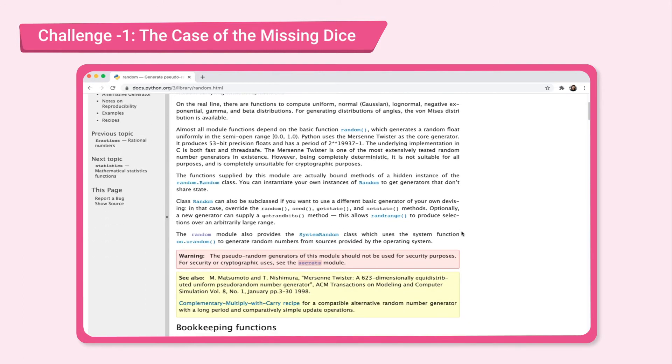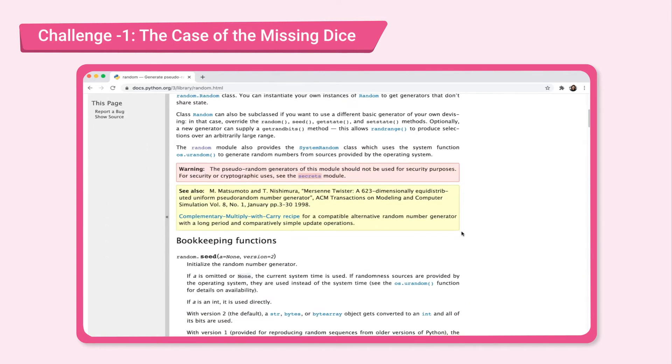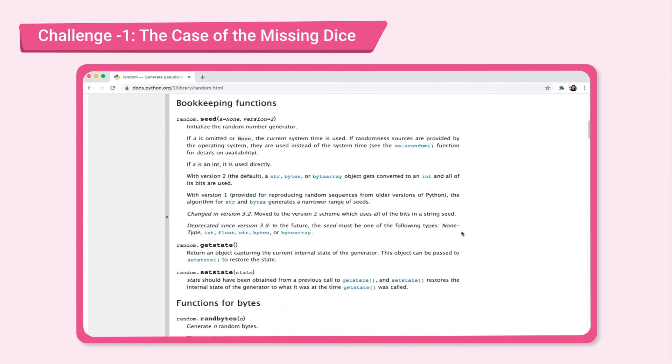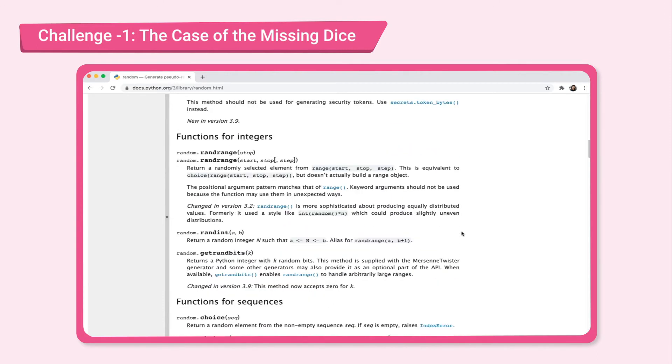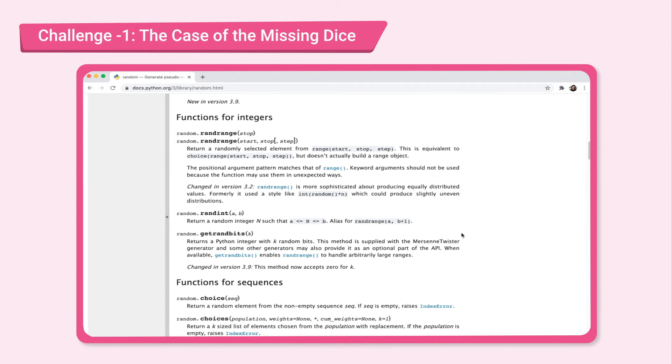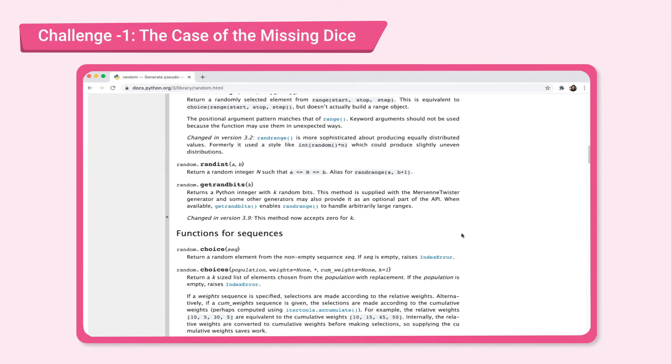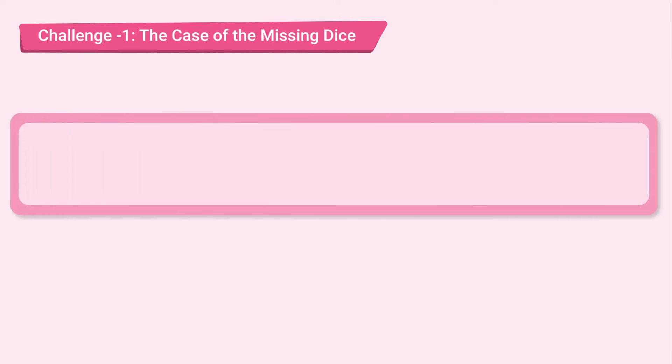At first, this page may seem overwhelming. However, you'd be surprised how much you are able to understand it after we do some lookup exercises. Here, we'll look at the functions provided by the random module. We need a function that will give us an integer between 1 and 6. randint function looks useful. Here's the description of the function.